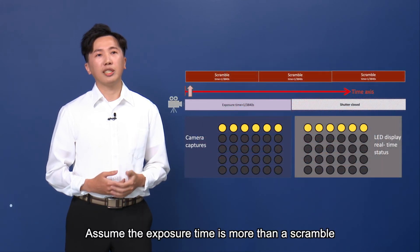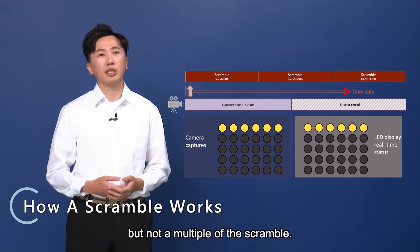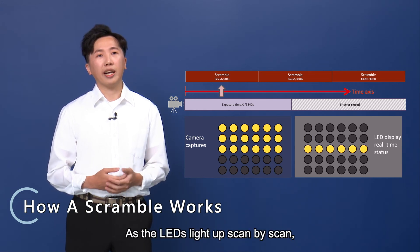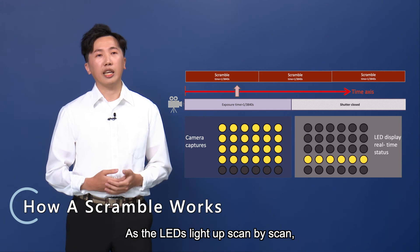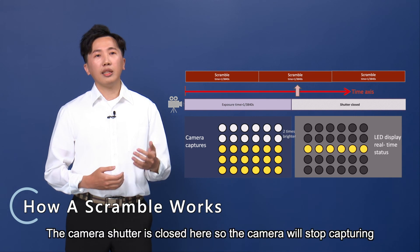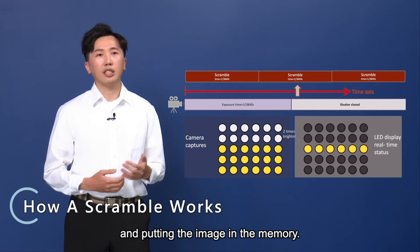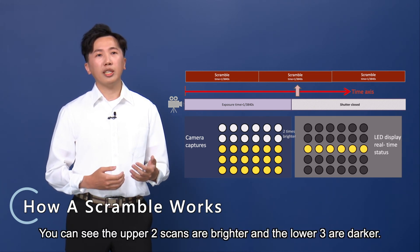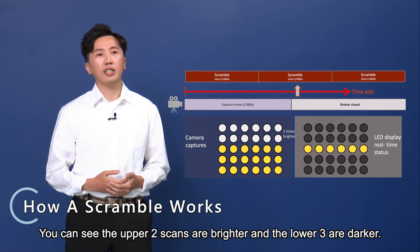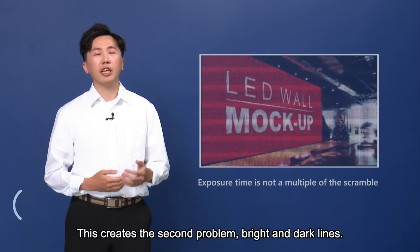Let's continue. Assume the exposure time is more than one scramble, but not a multiple of the scramble. As the LEDs light up scan by scan, the camera shutter closes partway through, so the upper two scans appear brighter and the lower three are darker. This creates the second problem: bright and dark lines.